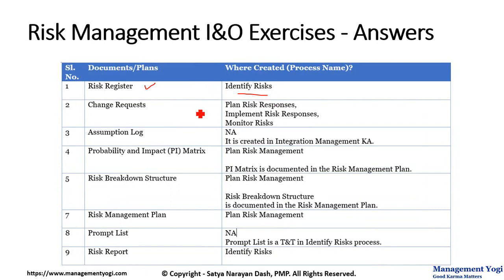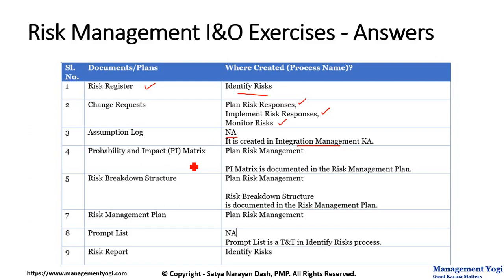Change requests are documents, though they are separately mentioned in the PMBOK Guide and other standards. Change requests are the output of three processes: Plan Risk Responses, Implement Risk Responses, and Monitor Risks. Next, the assumptions log is not created in risk management — that is why it is 'not applicable' — it is created in the Integration Management knowledge area. The Probability and Impact matrix (PI matrix) is not a separate document; it is documented as part of the risk management plan.